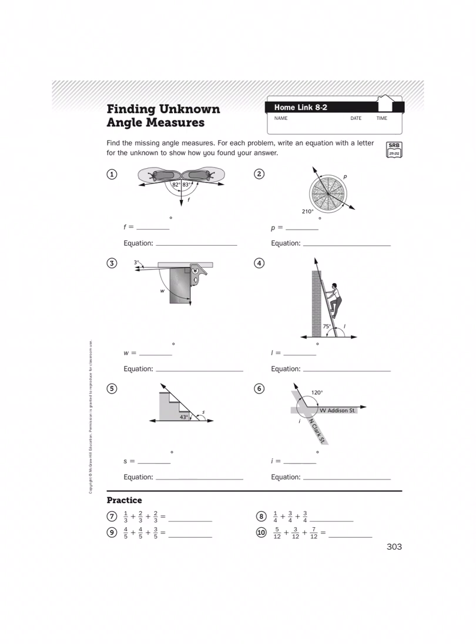It says, find the missing angle measures. For each problem, write an equation with a letter for the unknown to show how you found your answer.